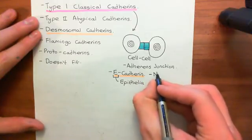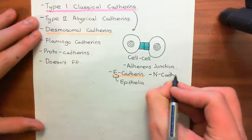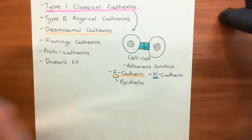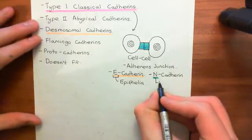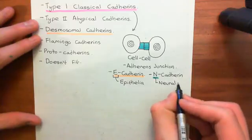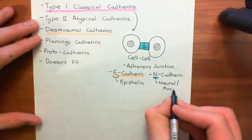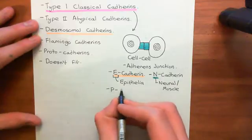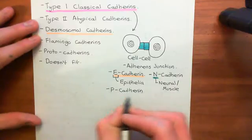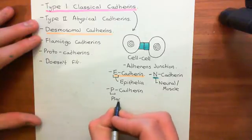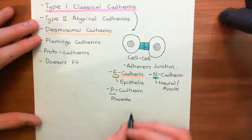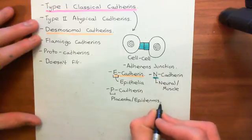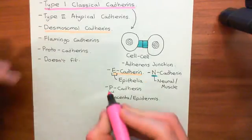Another major example is N-catherin. The N tells us about where you find this type of catherin: N is for neural, so these are catherines found in neural tissue. They're also found in muscle tissue, so it's not just neural tissue. The final example is P-catherin, where the P stands for placenta — you find a lot of P-catherin within the placenta. It's also found specifically within the epidermis, the outer layer of the skin, which is the epithelium that borders the outer world.